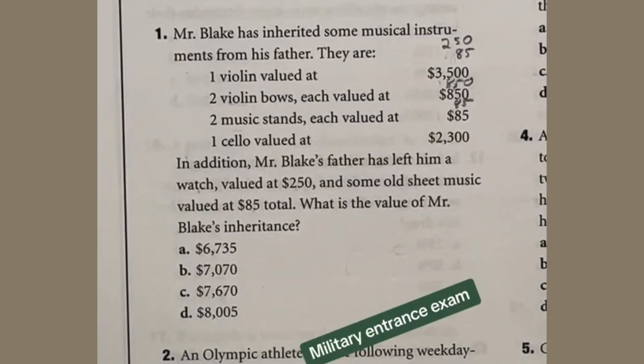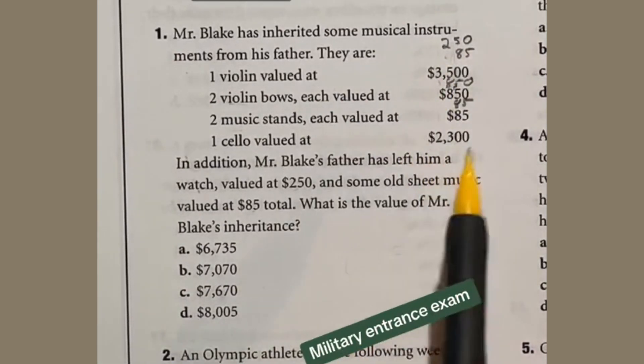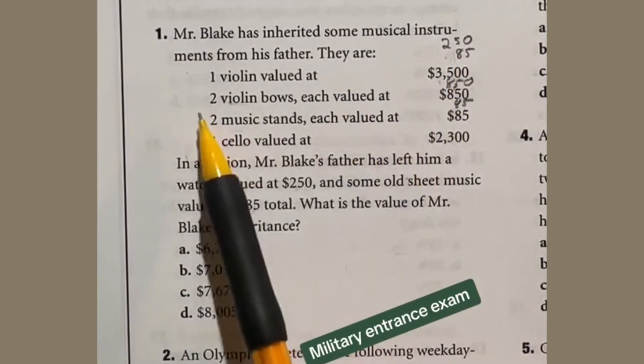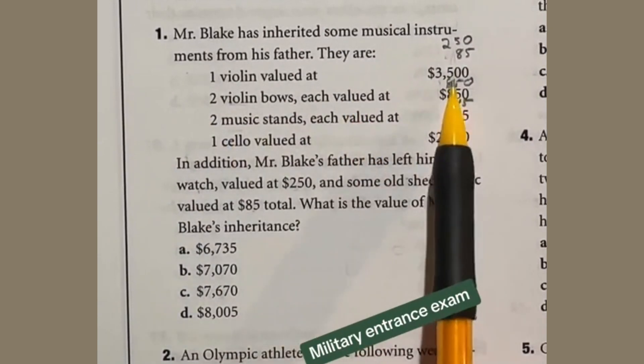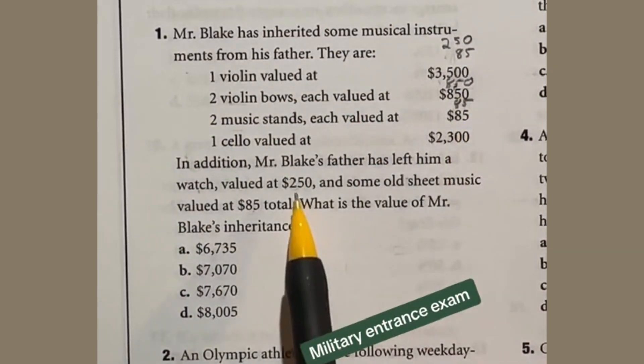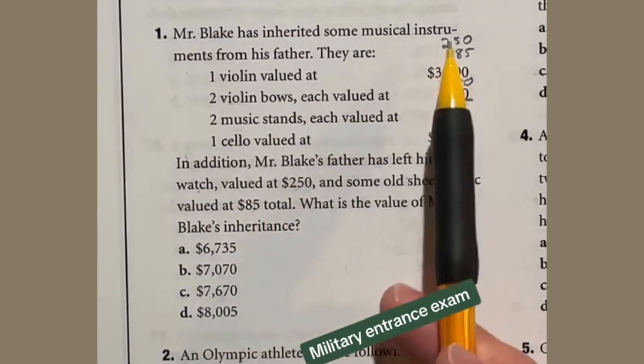For this arithmetic reasoning question we're going to add all these numbers up. Now notice I added some numbers to the list because it mentioned two of each of these, so I put one right above for each of those. And down here it says 250 and 85 were also added, so I put those at the top.